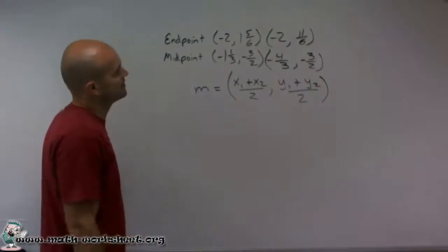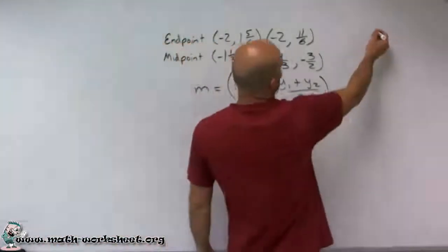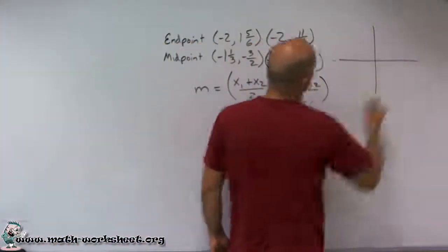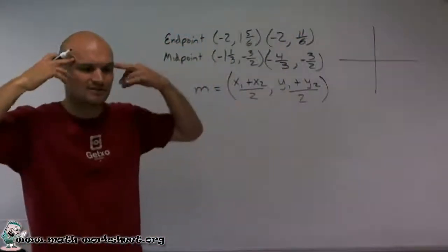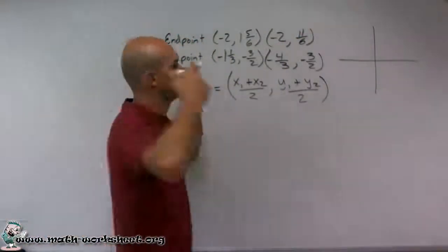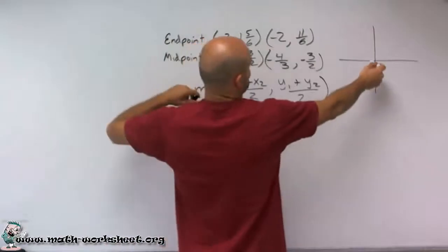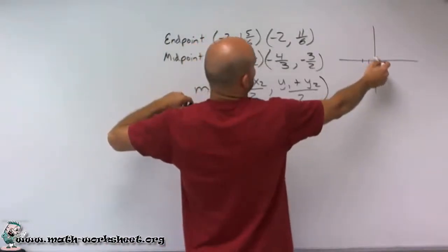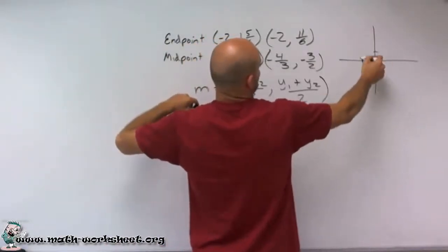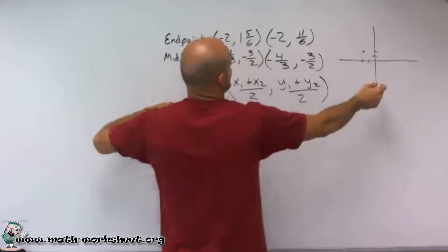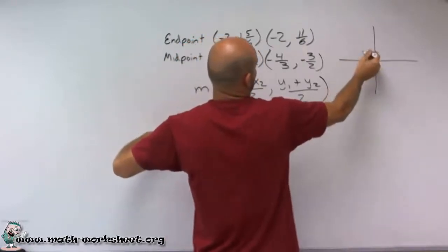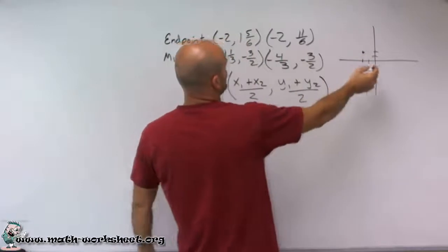So what we've done is we've been given two points. And I also like to draw a picture just so I kind of have a visual understanding of where I'm trying to go. So I plot this point, which is at negative 2, up 1 and 5/6, which is almost at 2, which is almost at positive 2. Then I go and plot my second point.